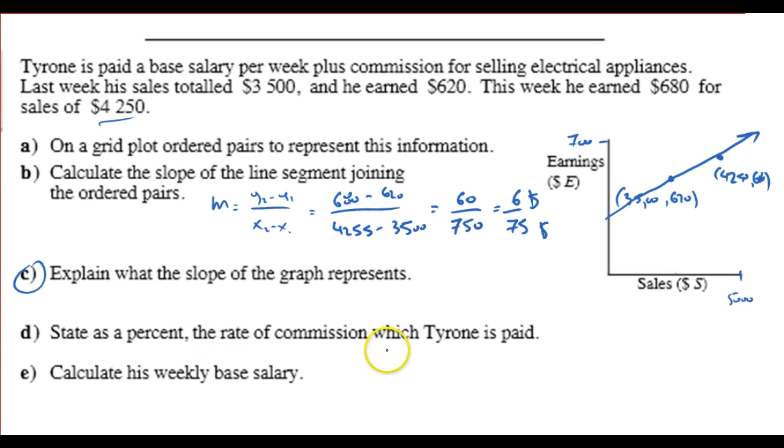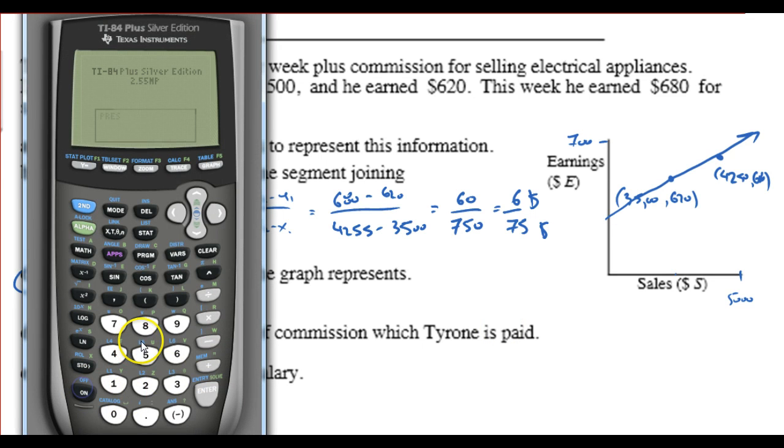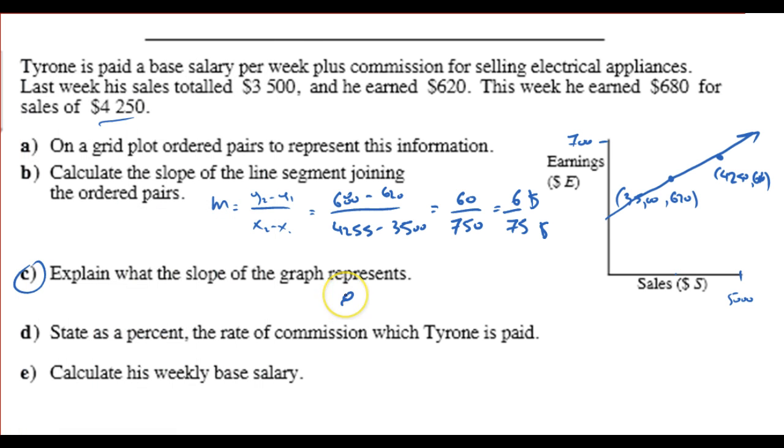State as a percent the rate of commission which Tyrone is paid. So, 6 divided by 75 is going to be, let me get my calculator out. 6 divided by 75 times 100 is going to be 8%. So, he earns a commission of 8%.